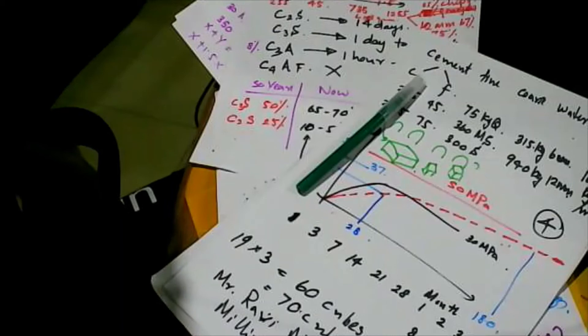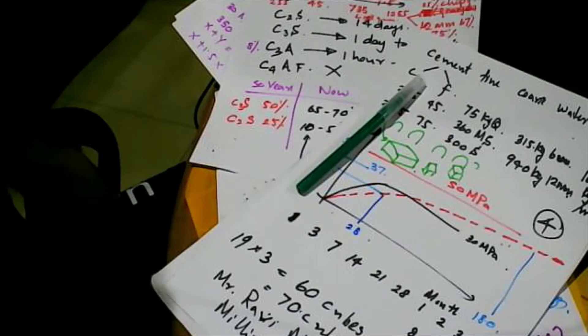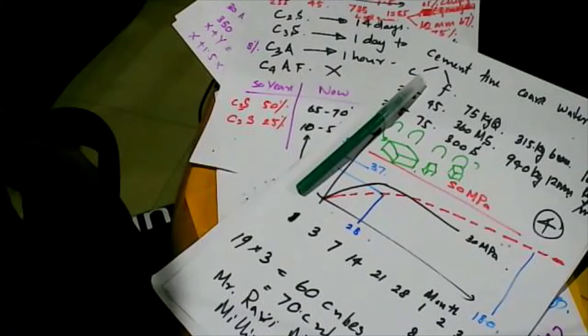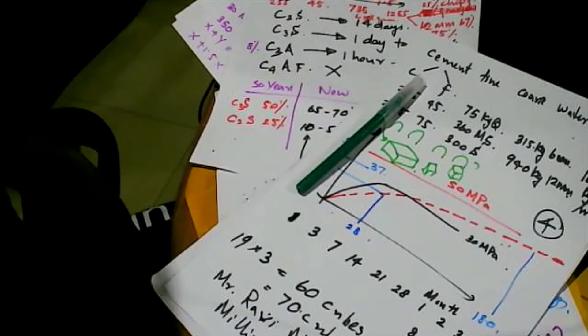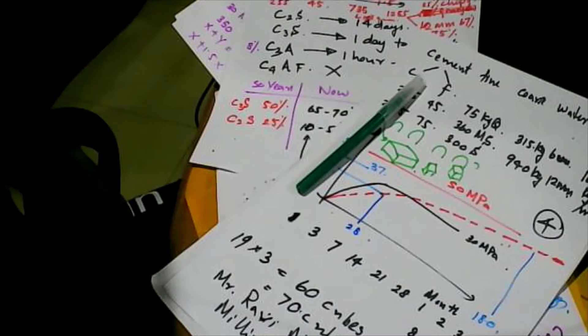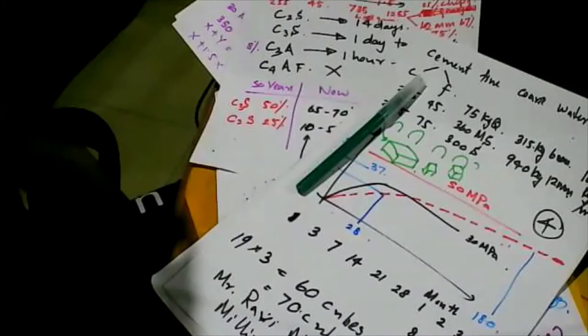The ceiling framework at 2.7 m height uses C-channel and L-angle with galvanized cold-formed steel. Fiber cement sheets of 50–58 mm are mounted in removable 4-foot × 4-foot panels. Workers can walk on the ceiling for maintenance access. This same system was successfully installed at Nigam Hospital.